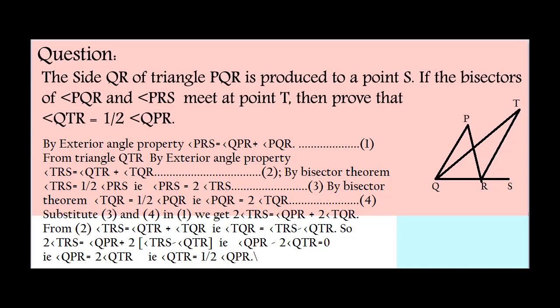That is, angle QTR equals angle TRS minus angle TQR. So by substituting, we get 2 angle TRS equals angle QPR plus 2 times bracket angle TRS minus angle QTR close bracket. That is, 2 angle TRS equals angle QPR plus 2 angle TRS minus 2 angle QTR, which gives angle QPR minus 2 angle QTR equals 0.